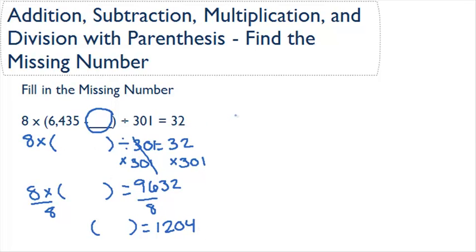Now since we already know that half of what is in our parentheses was given to us, we have 6,435 minus something equals the total of what was in our parentheses, which is 1,204. Now what number can we subtract from 6,435 to get 1,204?